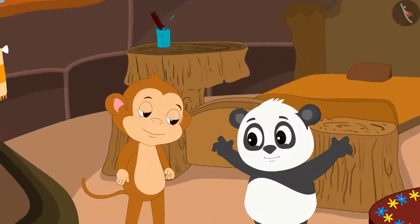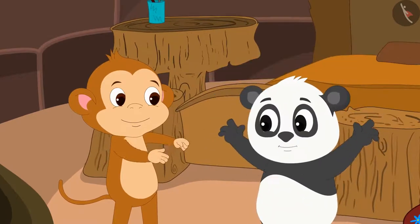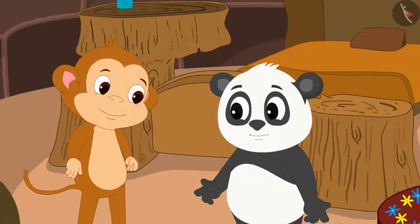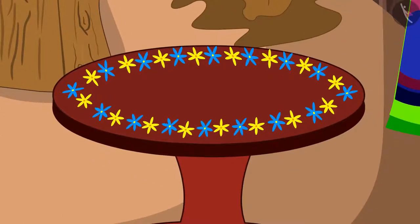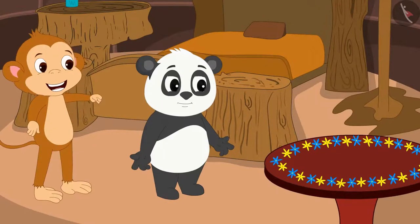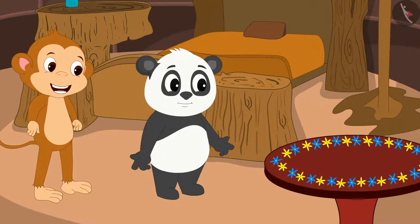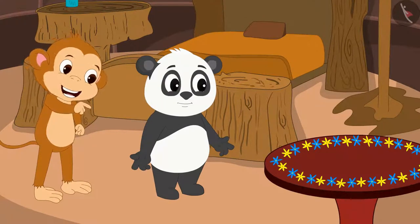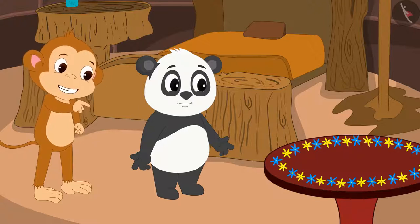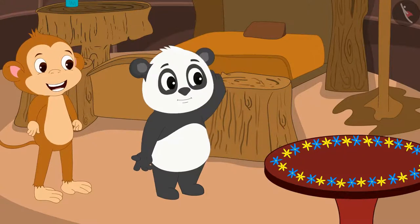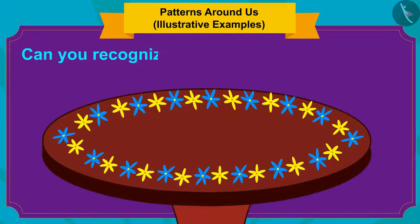Golu and Babban are playing at Golu's house. Suddenly, Babban's gaze went to Golu's table. Babban immediately called Golu and said, 'Look, this is such a beautiful pattern that you have made on your table, Golu.' Golu is unable to recognize patterns. Kids, can you recognize the pattern on Golu's table?